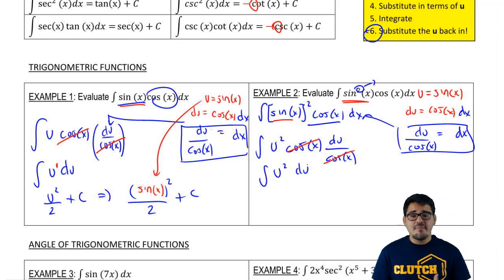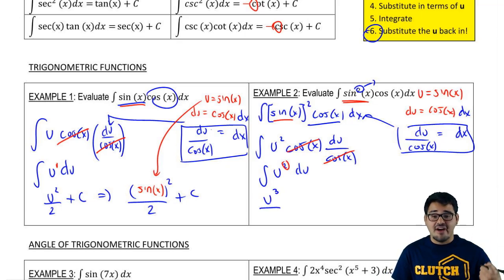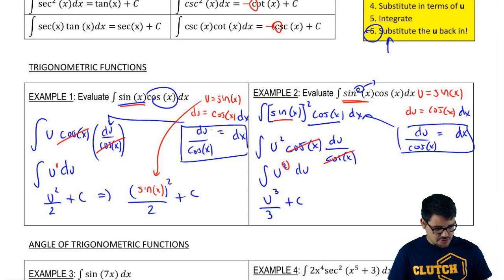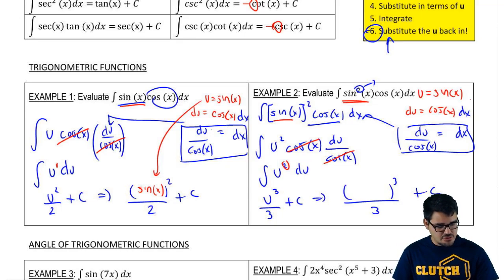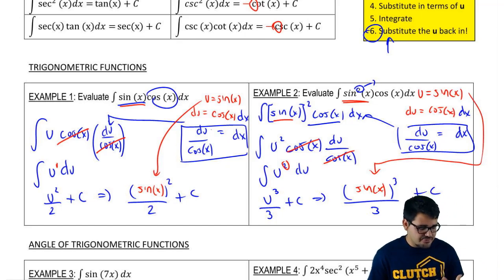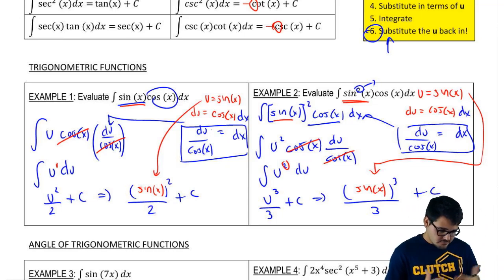This is now a simple anti-power rule. Integrating u squared: add 1 to get u cubed, divide by that exponent, and add C, giving u cubed over 3 plus C. The last step is substituting u back in — put sine of x into the parentheses — giving us sine cubed of x over 3 plus C. In this example it mattered which u we chose, unlike example one.